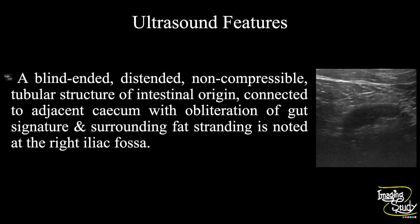In summary, a blind-ended distended non-compressible tubular structure of intestinal origin connected to the adjacent cecum, with obliteration of gut signature and surrounding fat stranding, is noted at the right iliac fossa — indicating a case of acute appendicitis. You may also note the early appearance of gangrenous change.